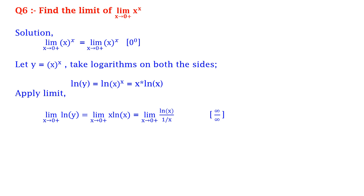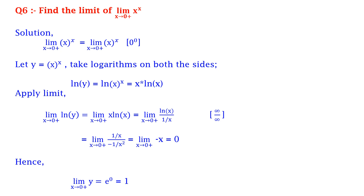This equals limit x tends to 0+ of ln x upon (1/x), which is again infinity upon infinity. So we apply L'Hôpital's rule, which gives us limit x tends to 0+ of (1/x) upon (-1/x²), which equals limit x tends to 0+ of minus x, which equals 0. Hence, limit x tends to 0+ of y equals e raised to 0, which is equal to 1.